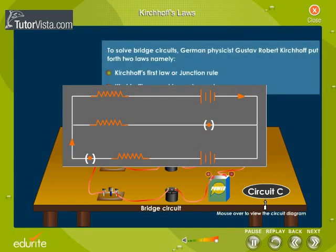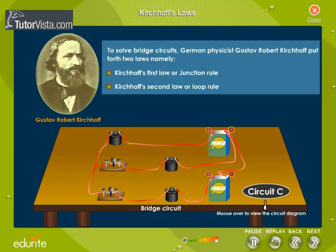To solve such bridge circuits, German physicist Gustav Robert Kirchhoff put forth two laws, namely: Kirchhoff's First Law or Junction Rule, and Kirchhoff's Second Law or Loop Rule.